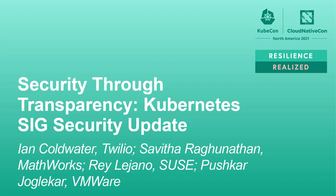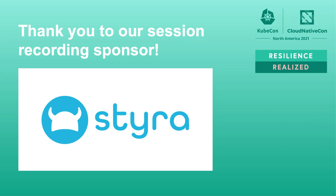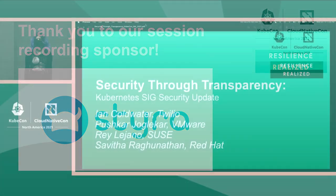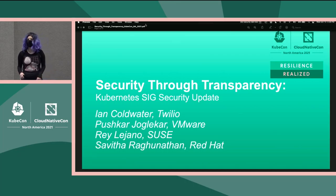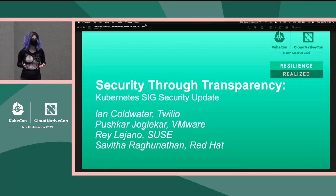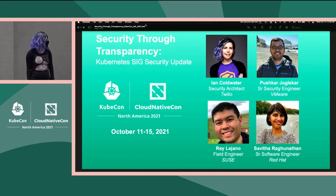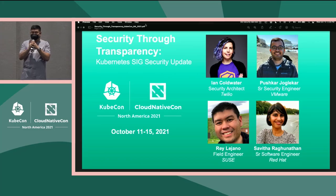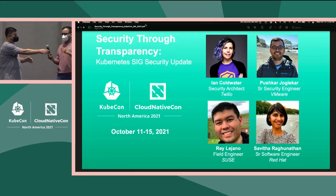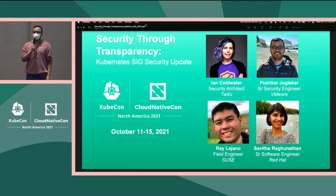We appreciate your patience and we appreciate you being here. This is the SIG Security update in the maintainer track. My name is Ian Coldwater and I am the co-chair of Kubernetes SIG Security. I'm Savita, I lead the security documentation sub-project. I'm Ray Lahano, a field engineer with SUSE by way of Rancher Labs, sub-project owner for the third-party security audits and the 1.23 release lead. And I am Pushker Zoecker, lead for SIG Security project tooling, working at VMware.